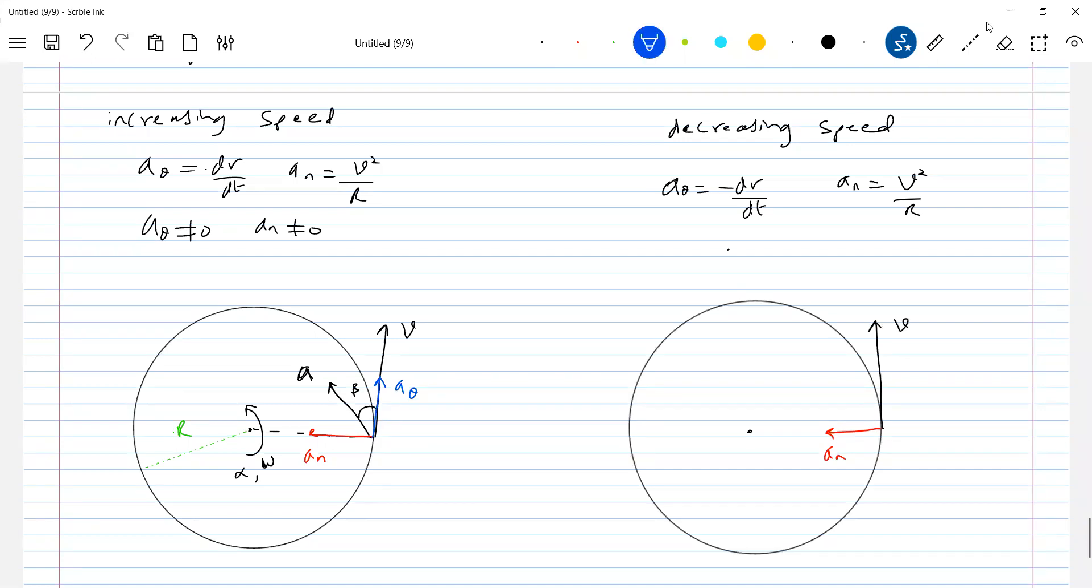So, A tangential will be in this direction. And the total acceleration vector will be like this. So, this will be the radius of the circular path.